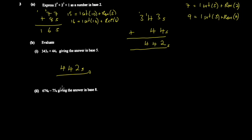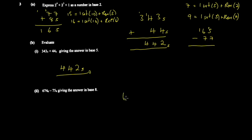Now for the subtraction part, giving your answer in base 8. Consider the base 10 analogy: 165 minus 77. For 5 minus 7, it can't work, so you borrow. You put a 1 in front, reading it as 15, because you added 10 — and we add 10 because we're in base 10. The same logic applies in base 8.